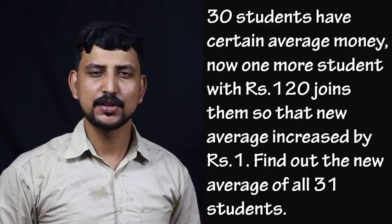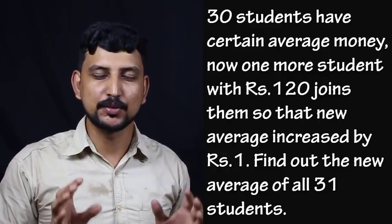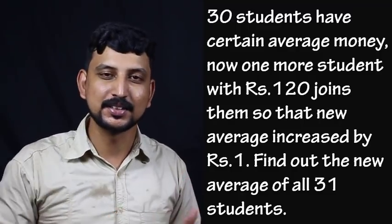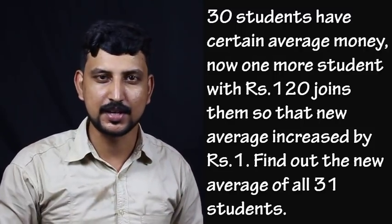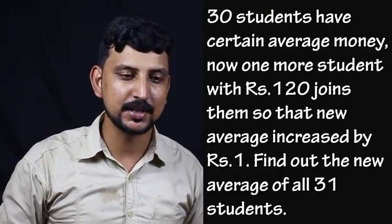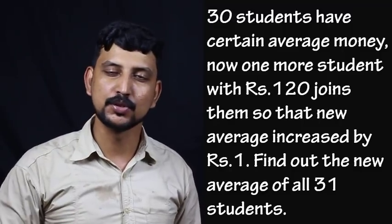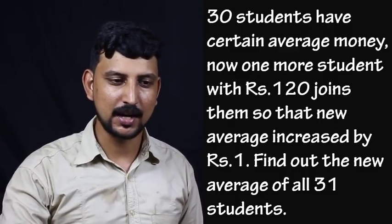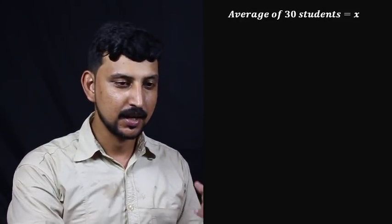30 students have a certain average money. If we write the average money, let the average be x. The total of 30 students is 30x. So the average of 30 students is x, and the total is 30x.